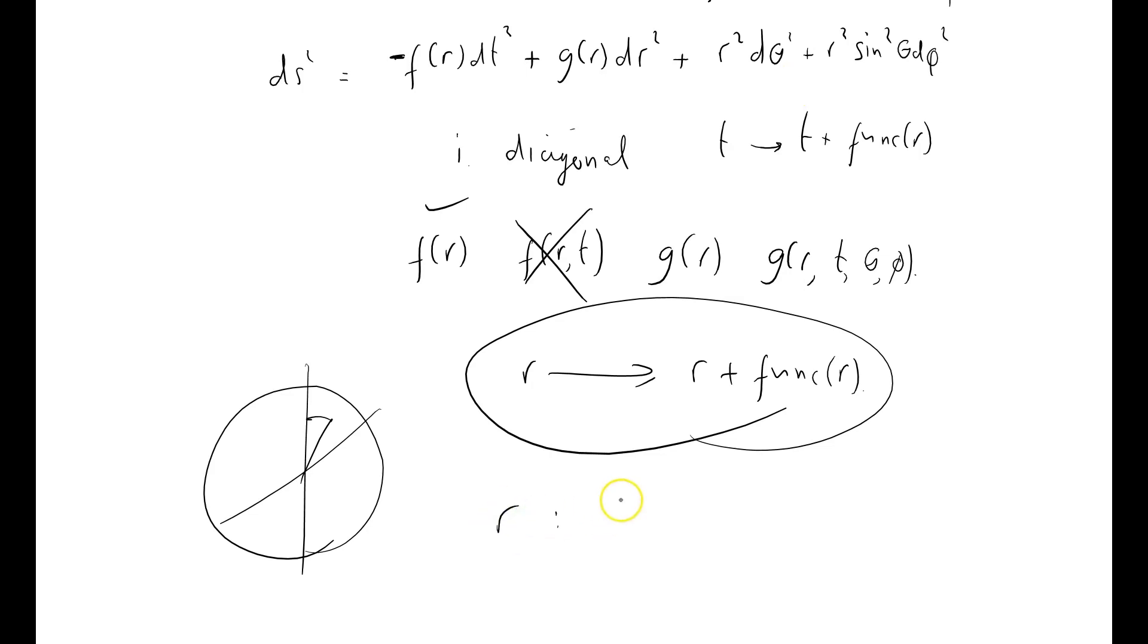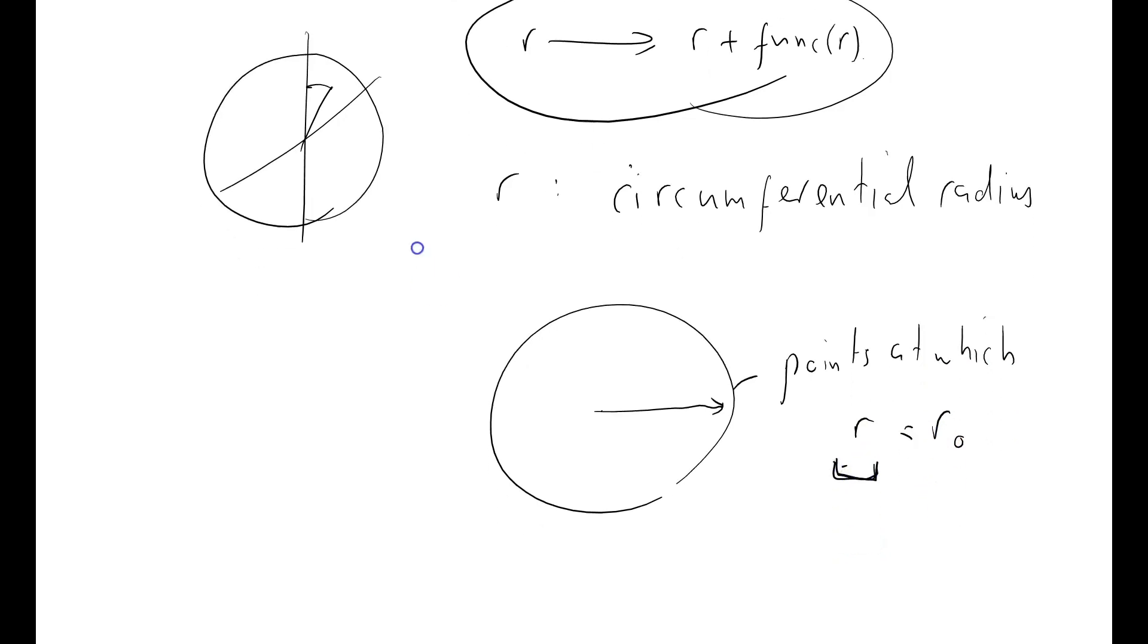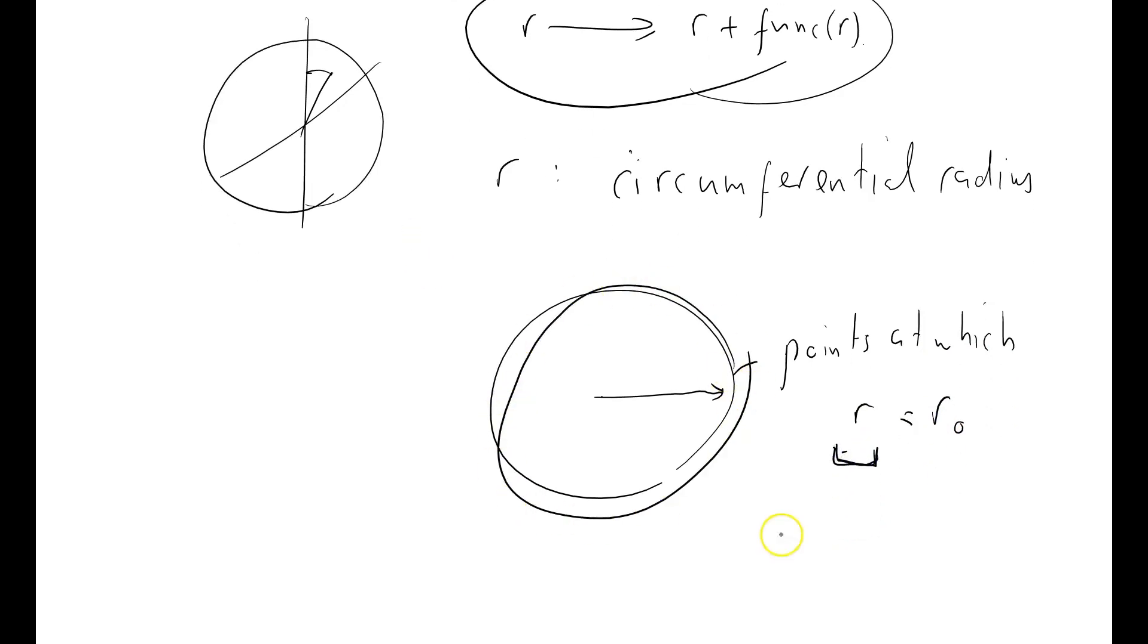R is sometimes actually called the circumferential radius, in the sense that if I have a circle of points at which R equals R0, and this thing here is my radial coordinate, then I know that the length of that circle, the circumference, equals 2πr0. I can specify that the circumference of that circle equals 2πr0 exactly, and I'll come back to this point again and again.